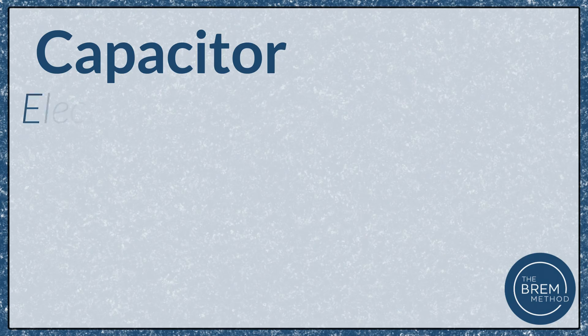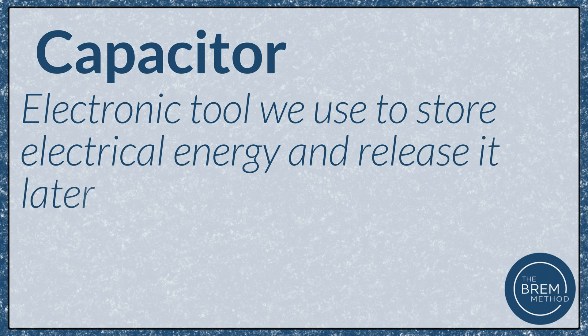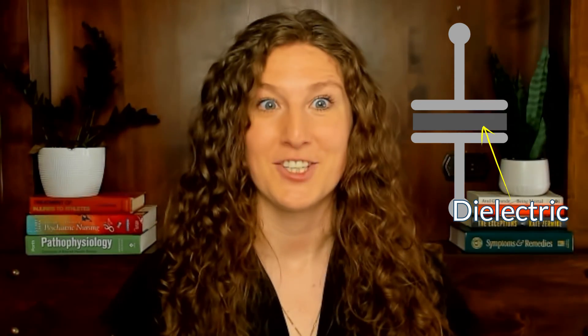A capacitor is an electronic tool that we use to store electrical energy and release it later. Capacitors generally have two conductive, usually metal, plates that are separated by an insulating material called a dielectric. When a voltage is applied across the plates, an electric field develops in the dielectric, allowing the capacitor to store energy and release it when we flip the circuit. The charge is stored only on the surface of those plates, so the surface area of the capacitor is what matters most in terms of how much energy it can store.